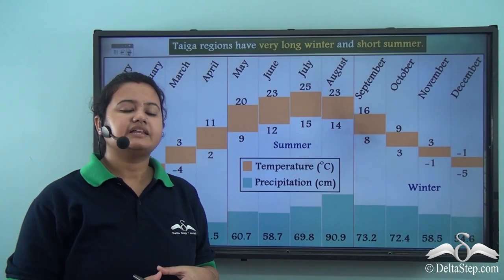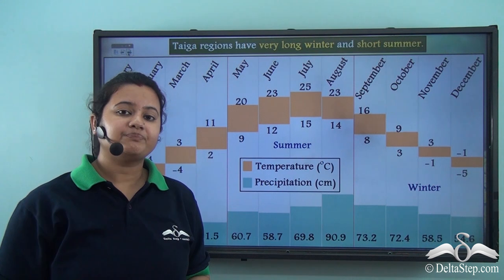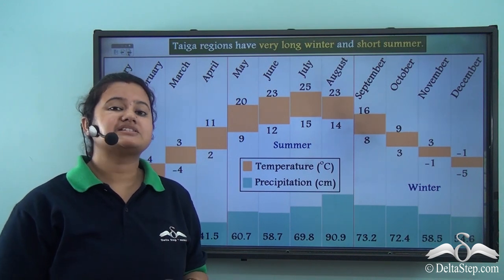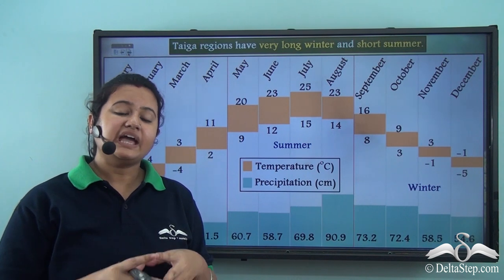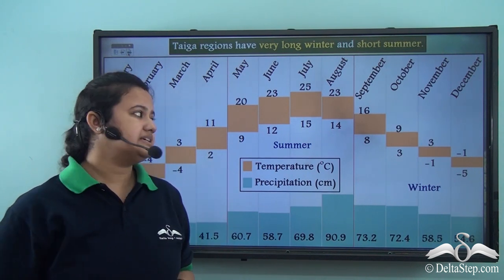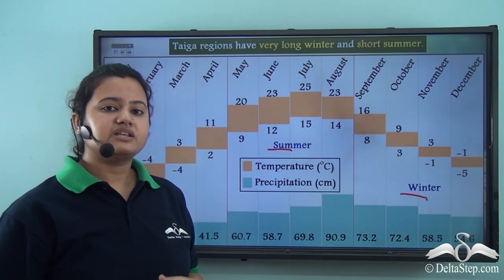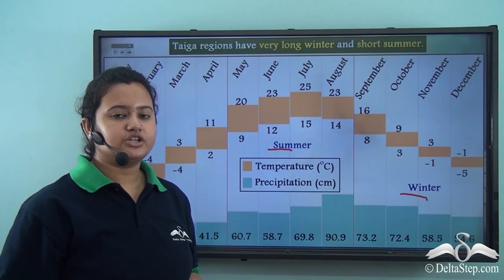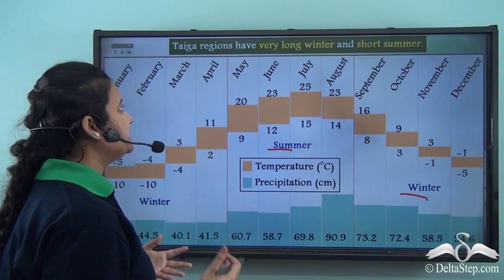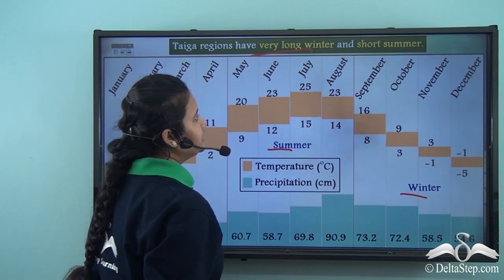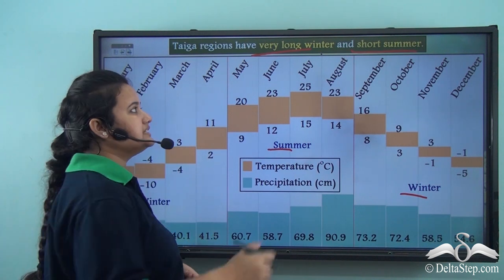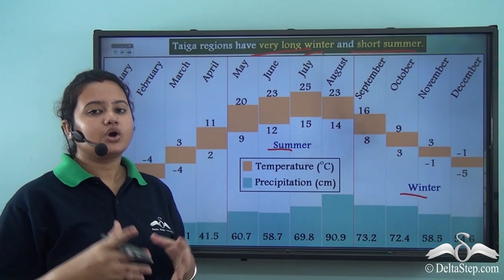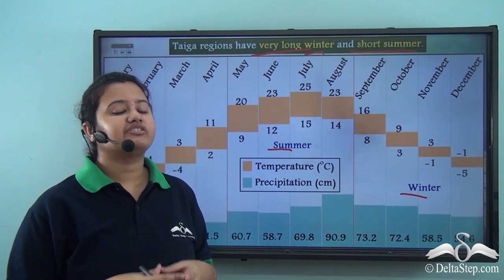Based on three factors — proximity to the frigid zone, receiving slanting rays of the sun, and experiencing cold polar winds — we can conclude that the Taiga region has low temperature round the year. It experiences two distinct seasons: summer and winter. Summer prevails only for a short period, whereas winter prevails for a longer duration, making Taiga regions have very long, bitterly cold winters and short summers.